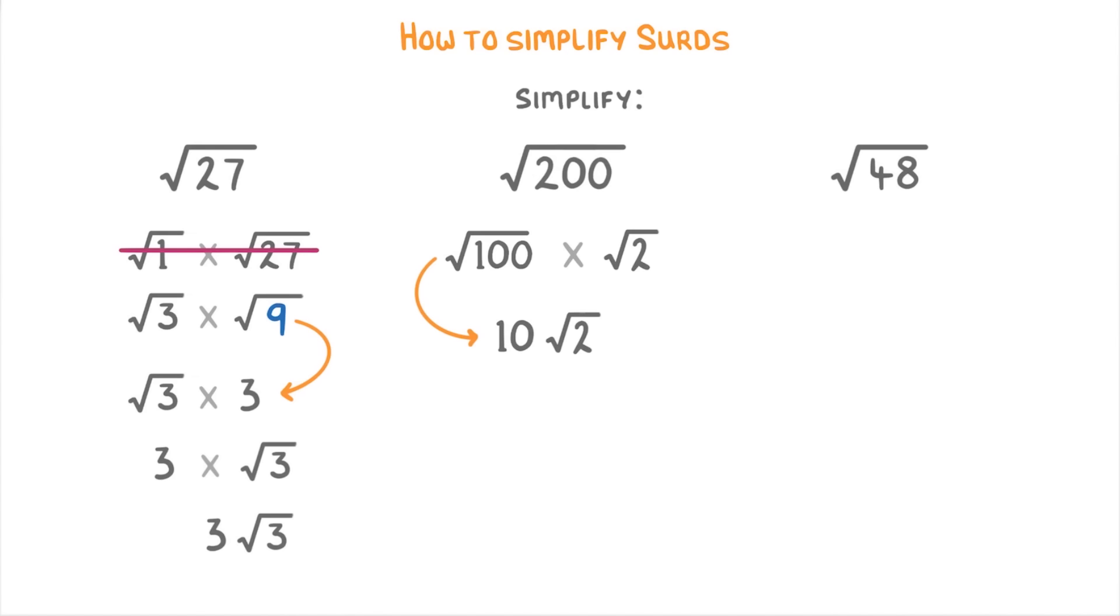For root 48, the easiest way to do it is notice that it equals root 16 times root 3, which we can simplify to 4 times root 3, or just 4 root 3.